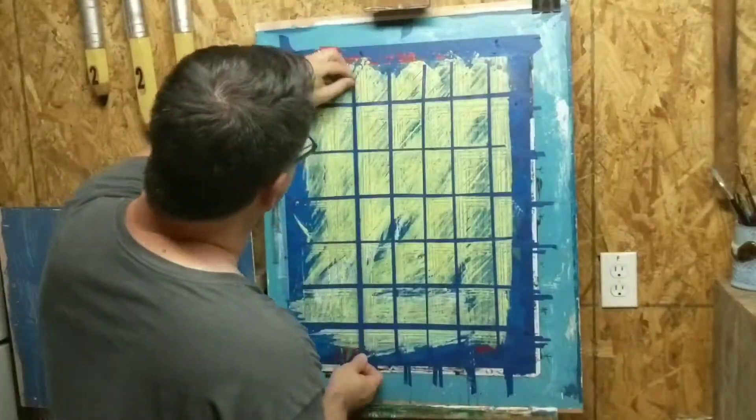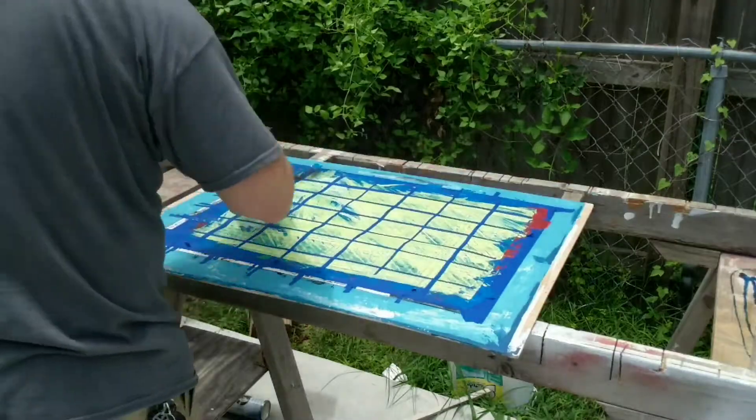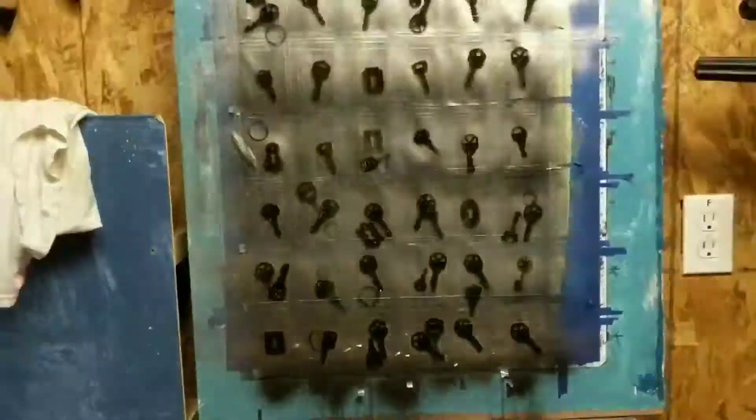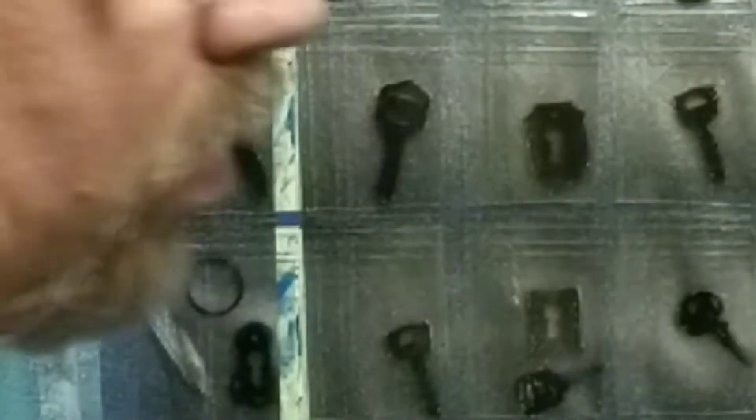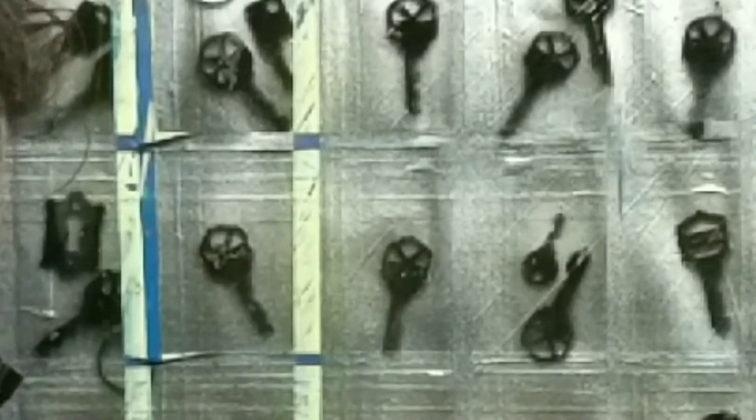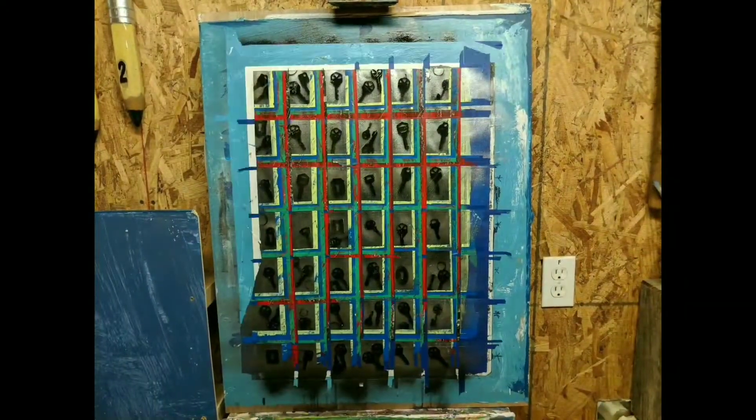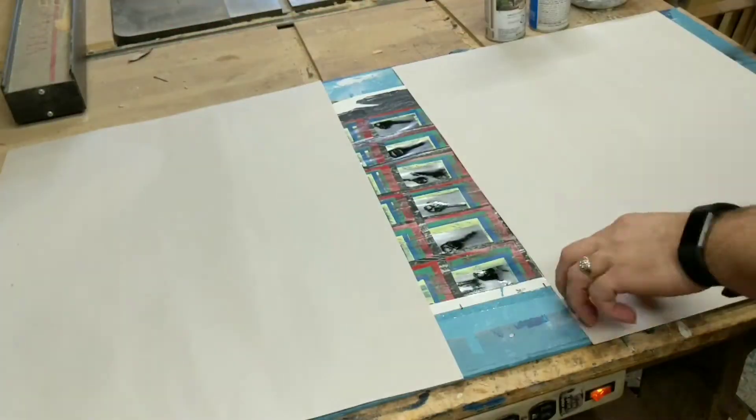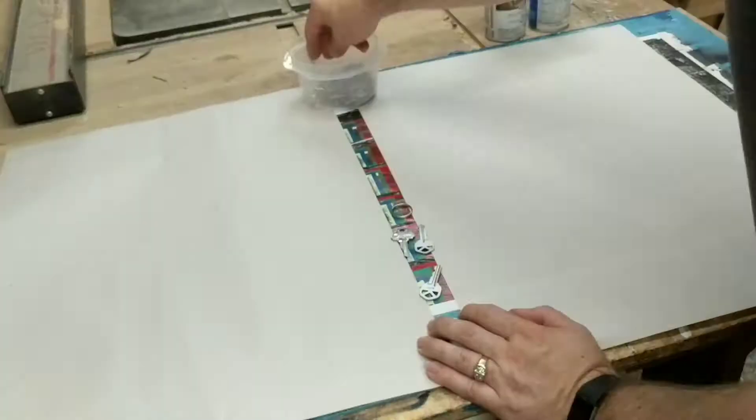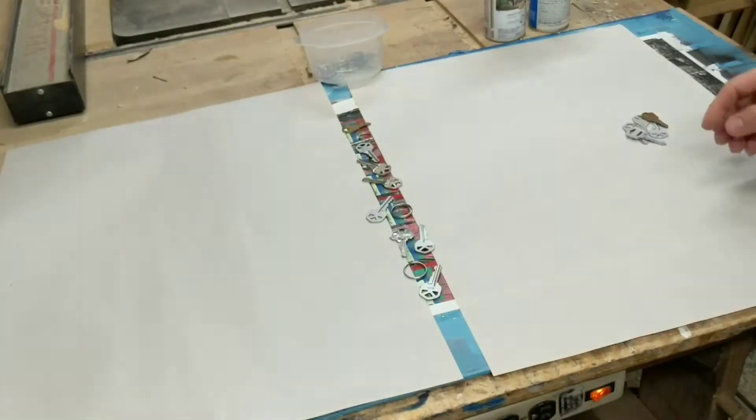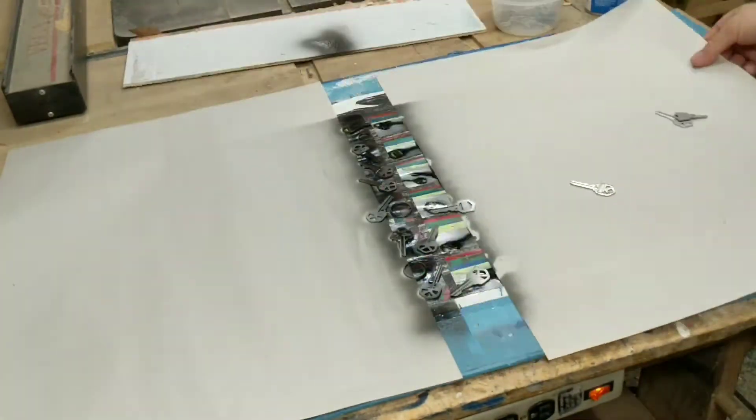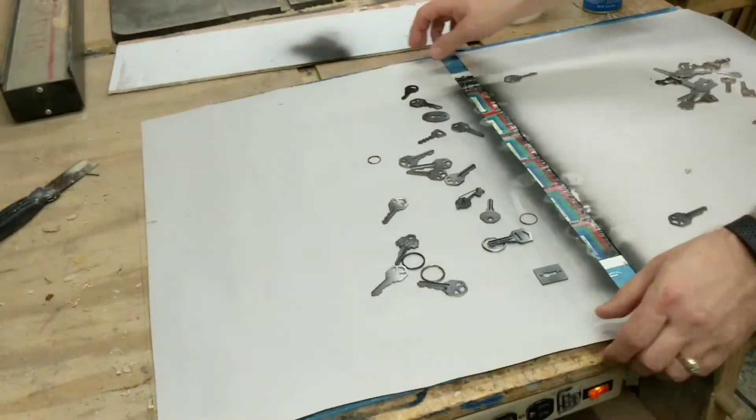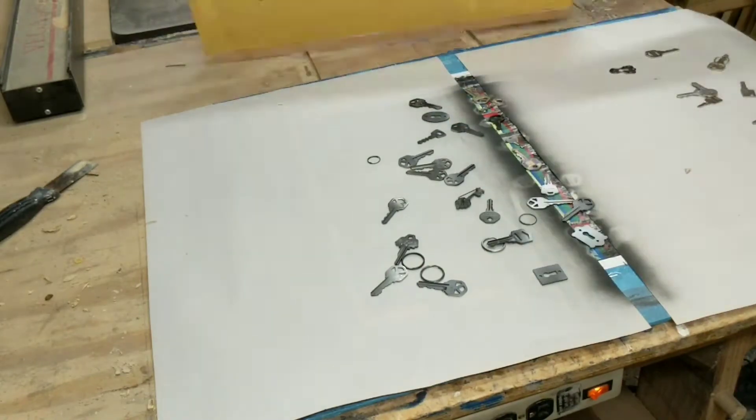I also wanted something a little bit more objective in here, rather than just a straight abstract painting. So I got these keys, and after spraying the paper black, I then laid the keys all over it and spray painted it silver. And now I'm taking all of the tape off of it, and what I'm left with was kind of a picture that I didn't really like.